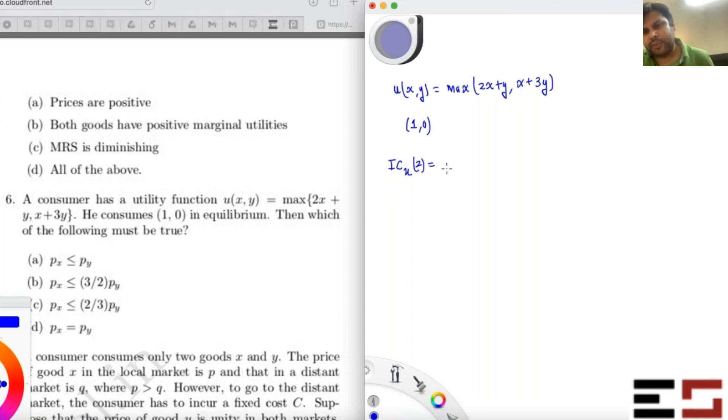So let's plot ICU2. ICU2 is all those x,y's such that max of 2x plus y comma x plus 3y is equal to 2, right? So you just have to plot this. We'll just do the same set of steps that we have seen in the lectures.